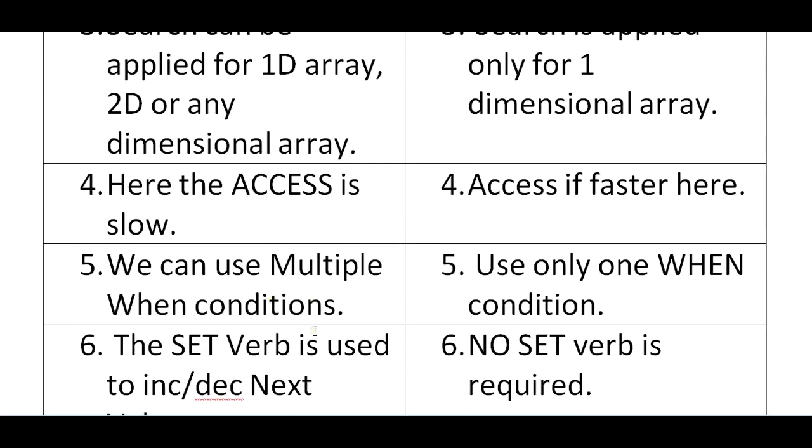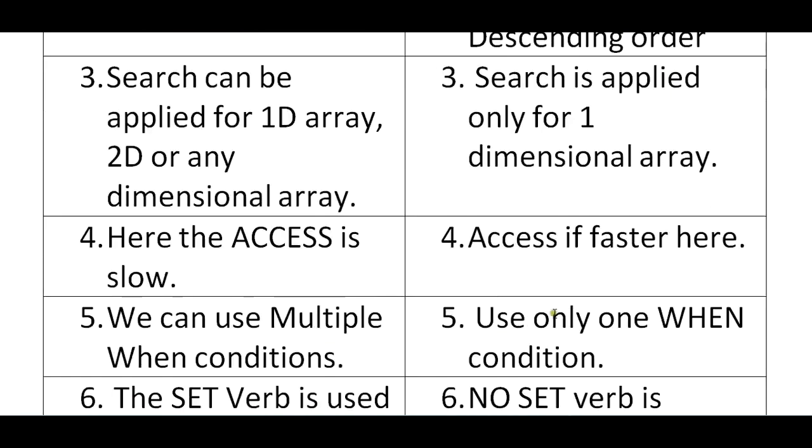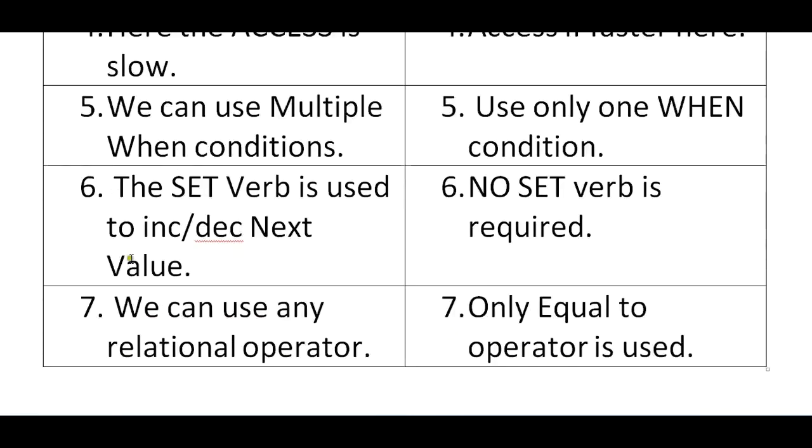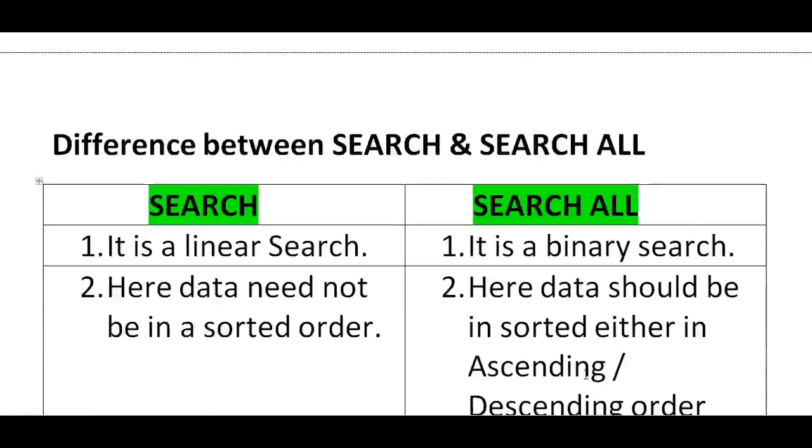Here we can use multiple when conditions. That is in search. Whereas in search all you can use only one when condition. The set verb is used to increment or decrement the next value. No set verb is required in search all. So we can use any relational operators in search. Only equal to operator is used in search all. So these are all the difference between the search and search all.